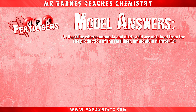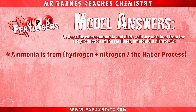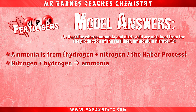Okay, let's go through. So where do we get ammonia and nitric acid from? For ammonia, you can either say it's from hydrogen and nitrogen, or from the Haber process. The examiner will also accept a word or balanced equation: nitrogen plus hydrogen forms ammonia, or N2 plus 3H2 goes to 2NH3. Any of those three will get you your first mark.